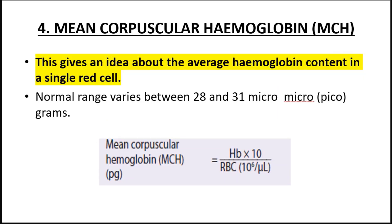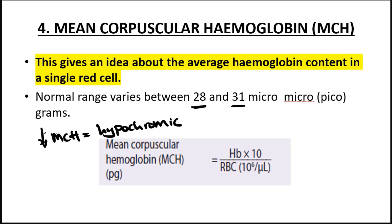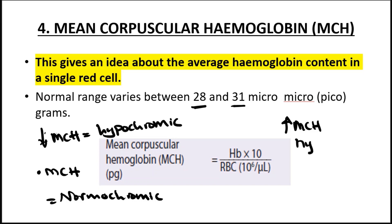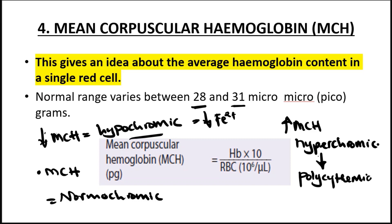Number four is the mean corpuscular hemoglobin (MCH). This gives an idea about the average hemoglobin content in a single red blood cell. The normal values are between 28 and 31. If you have a low MCH, you have hypochromic anemia because the hemoglobin is low. A normal MCH means normochromic. A high MCH means hyperchromic, which is seen in polycythemia vera — where there is abnormal production of red blood cells.